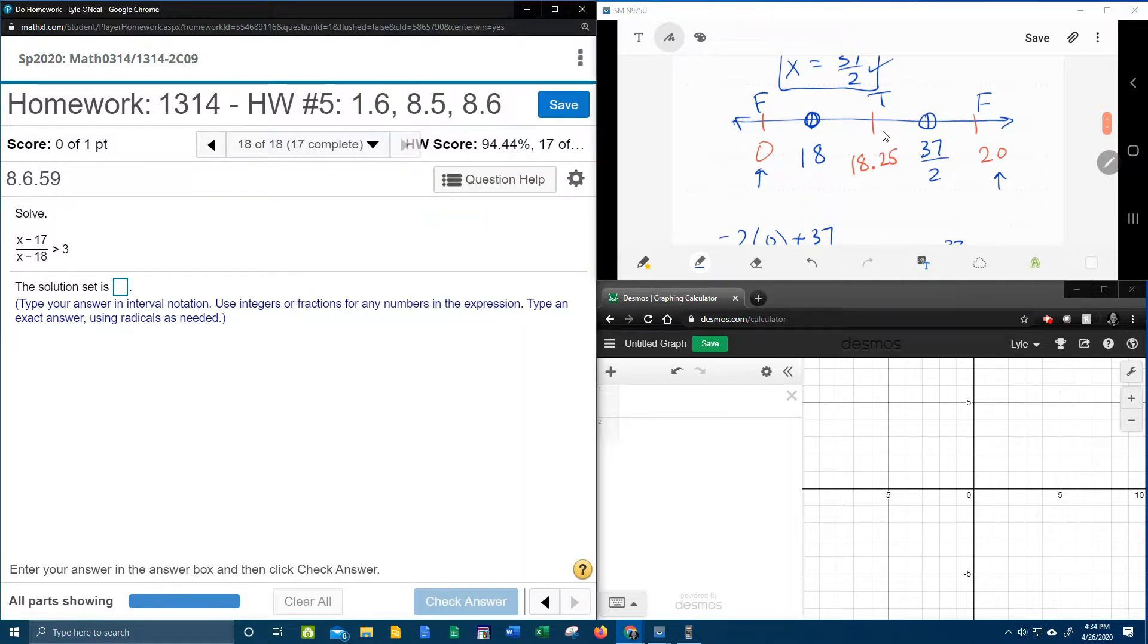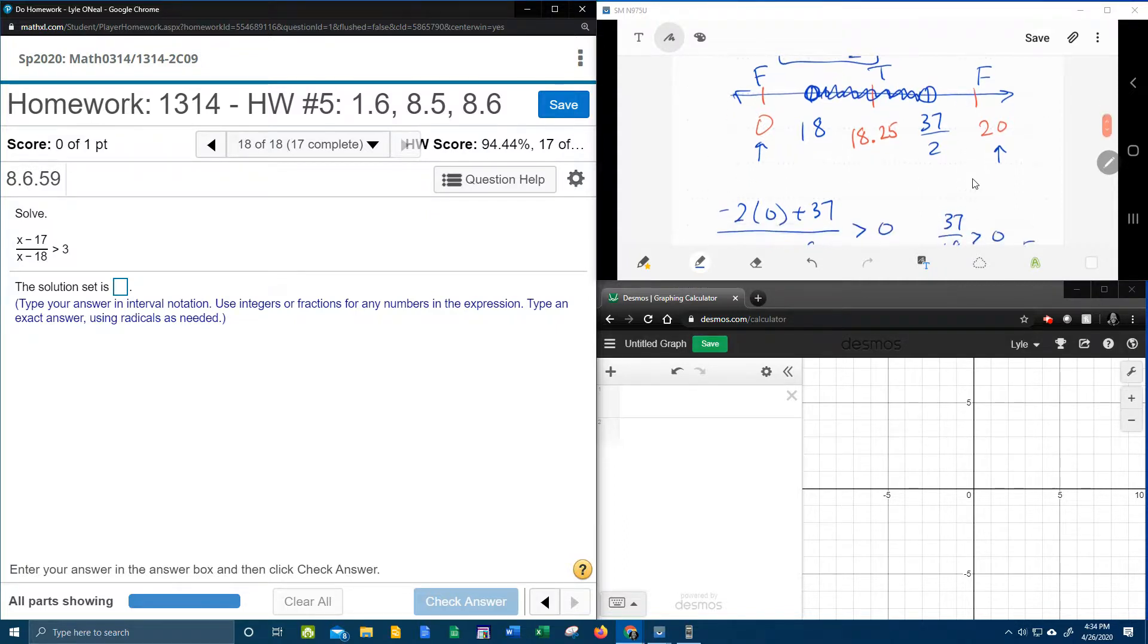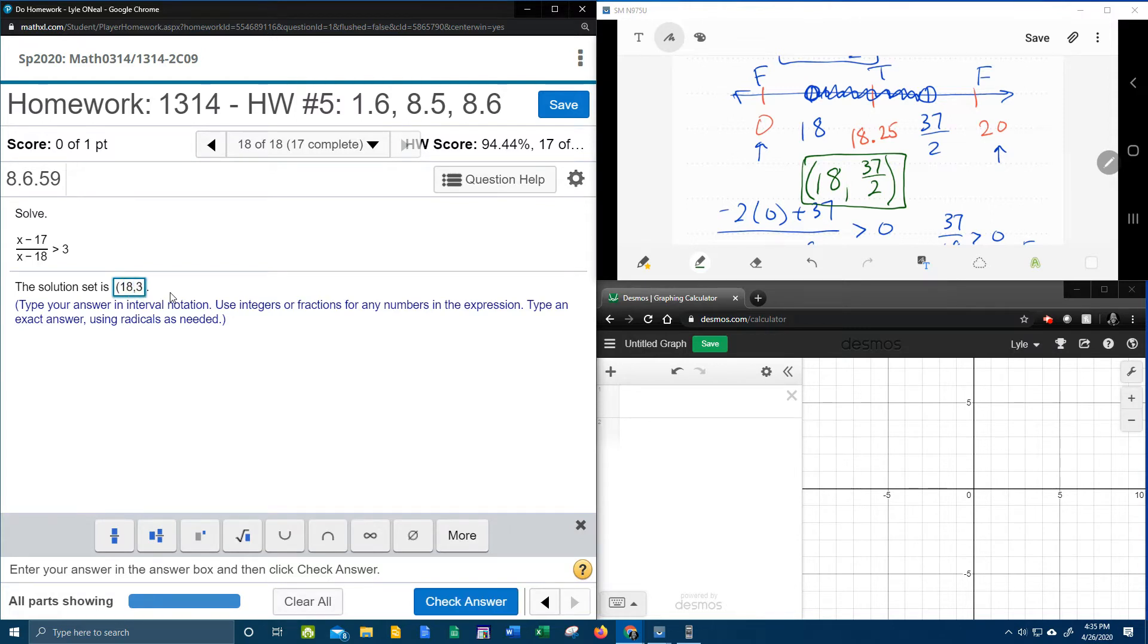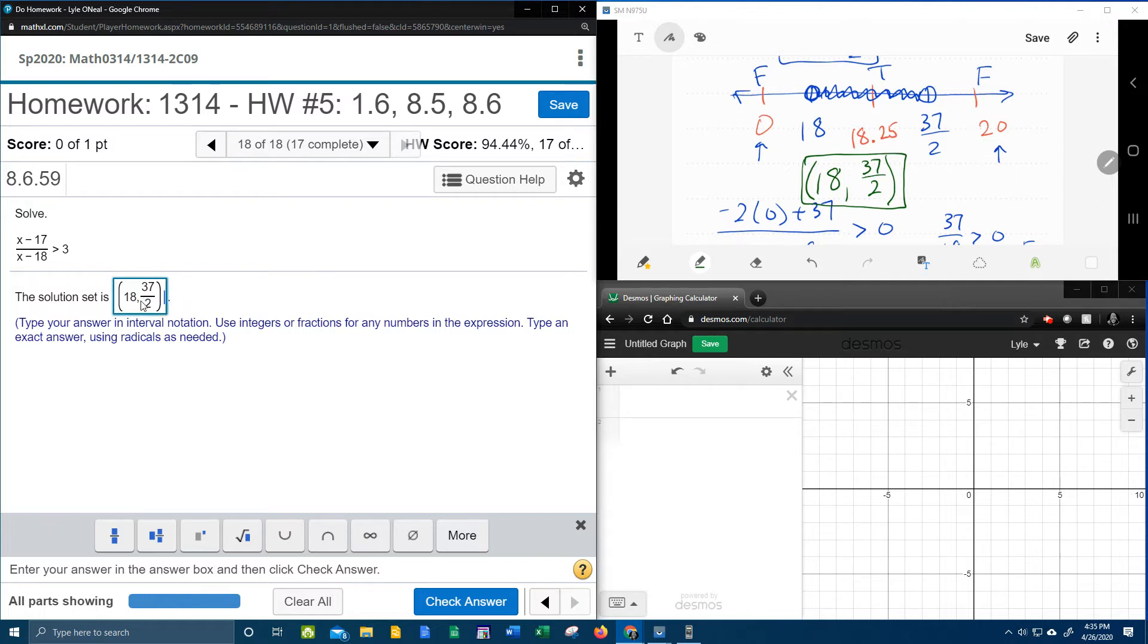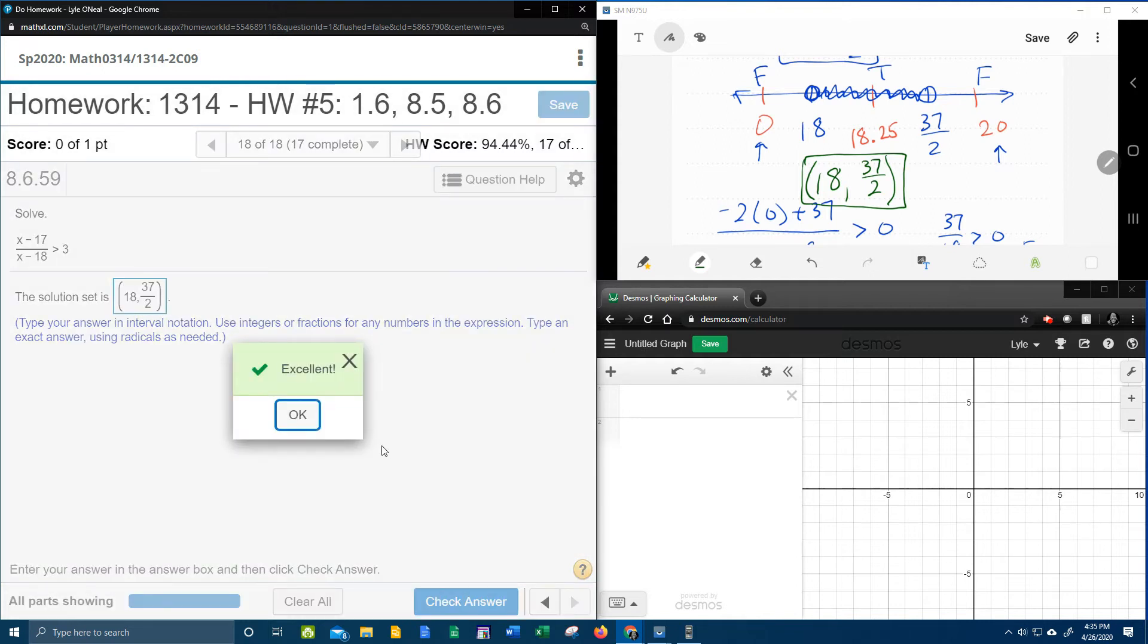We shade the true regions, so everything between 18 and 37/2. I can now write the interval notation. Moving from left to right, the shading starts at 18 with an open circle, so 18 is not included, and goes up to 37/2, also not included. So the solution in interval notation is (18, 37/2). Let me type that in carefully—and that's correct! If you have any questions or comments, feel free to put those in the comment section below or text me. Thanks for watching.